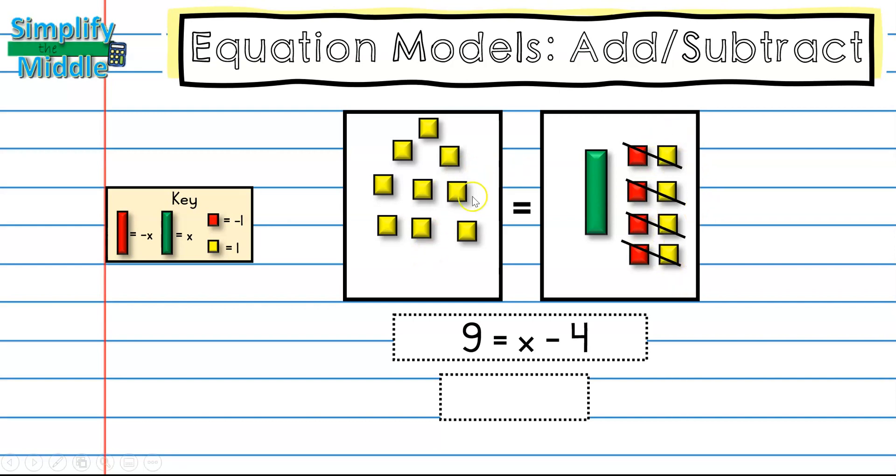However, something very important for equations: whatever I do to one side, I have to do to the other. Because I added four positives to this side to create these zero pairs, I need to add four positives to this side. My zero pairs you can really pretend like are not there at all. Then we just read our mat to find our answer. So I have the nine I started with plus 10, 11, 12, 13. So my answer is 13 equals x.